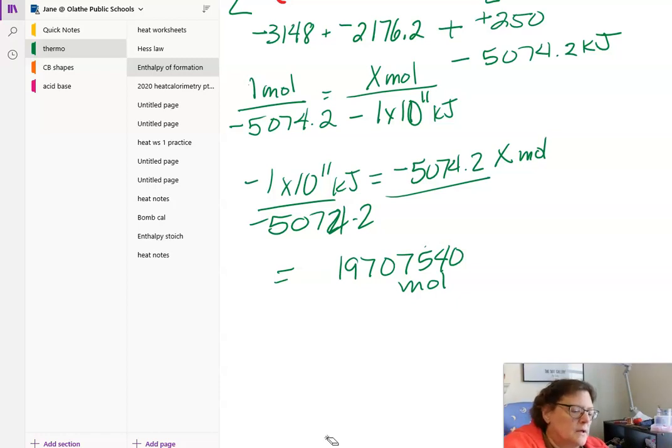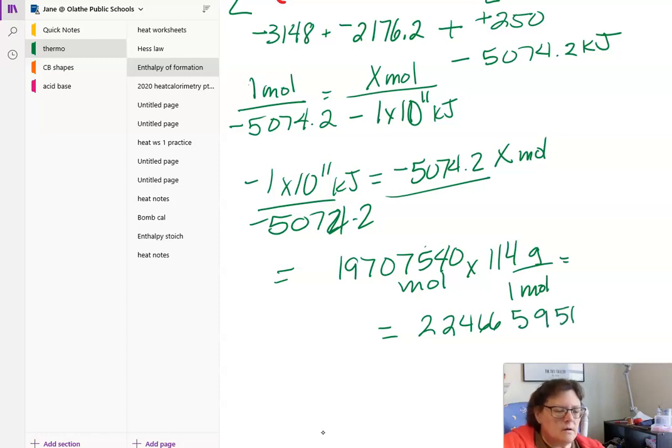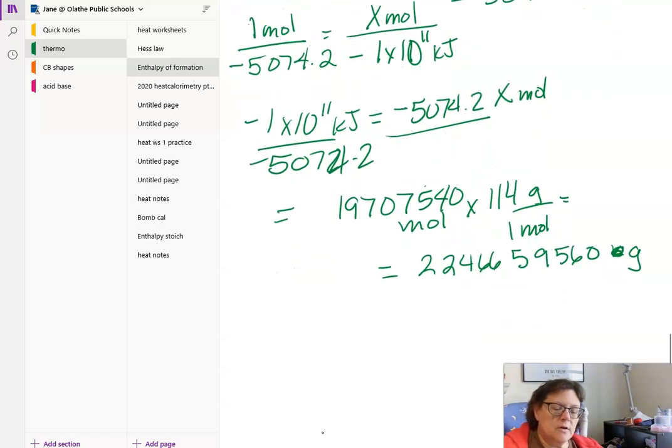Alright. So this is a plus, not a four. I'm going to get confused. Moles to grams we multiply by the molar mass. Molar mass of octane C8H18, so 12 times 8 plus 18 is 114 grams per mole. 19707540 times 114. That's grams. Let's convert it to kilograms. We divide by a thousand.